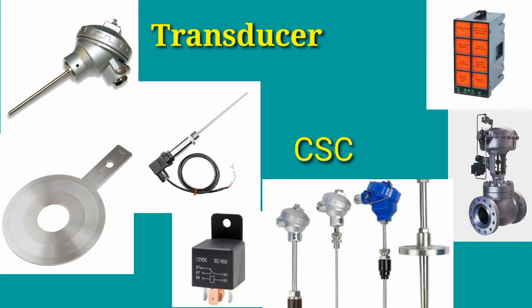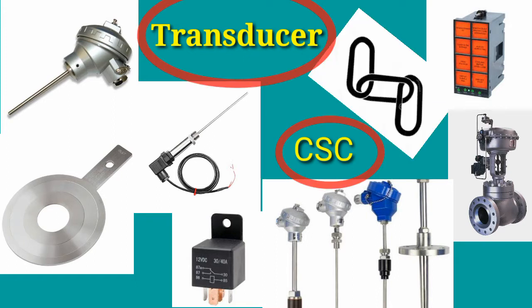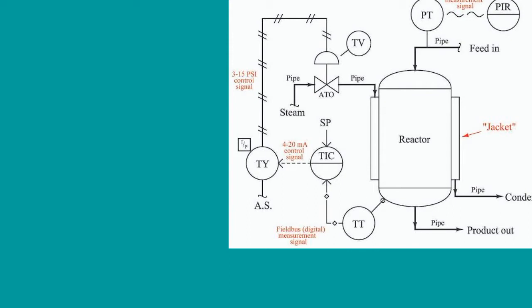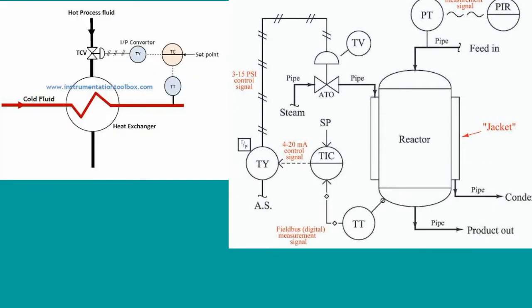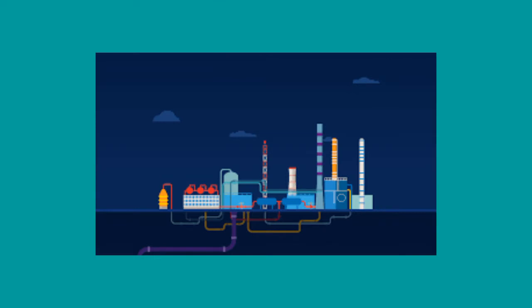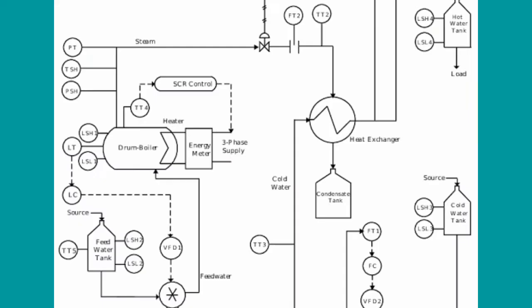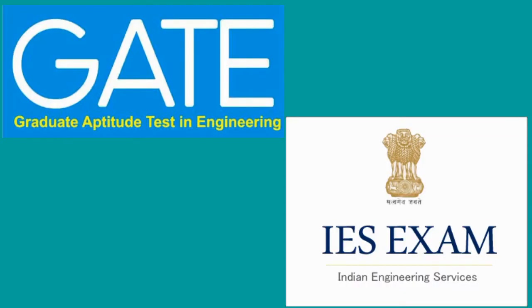Combining sensors and transmitters together, we form one short loop. These short loops together form large industries like oil and gas, milk industry, cement industry, pharmaceutical industry, and many more. This is the actual linkage of Control System Component — a very important subject from an instrumentation engineer's point of view, and important for post-graduation, GATE, and IES examinations.